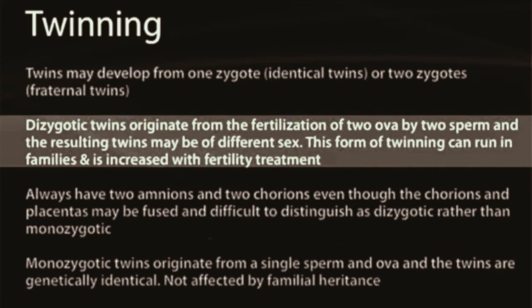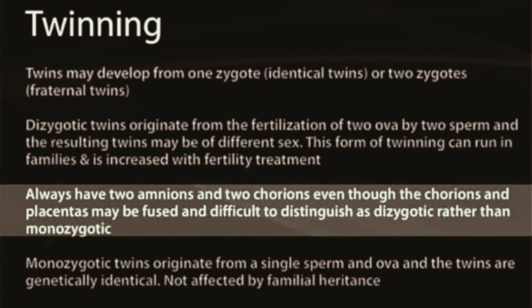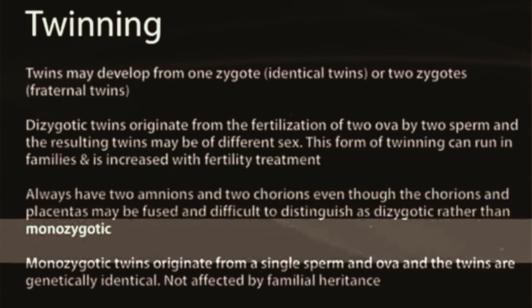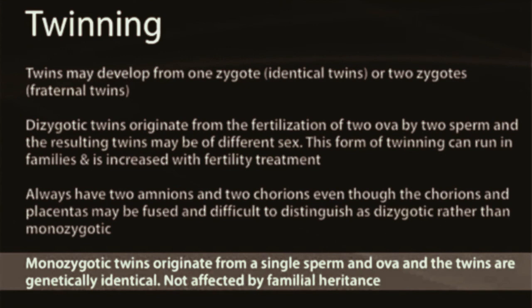There are a couple of red flag issues to look for in exam question stems about twinning. Dizygotic twins always have two amnions and two chorions, although the chorions and placentas can fuse together and be difficult to distinguish from monozygotic — this is clarified if they are different sex. Monozygotic twins originate from a single sperm and a single ovum; the twins are genetically identical, and this type of twinning is not a familial heritance issue — it is one of chance.